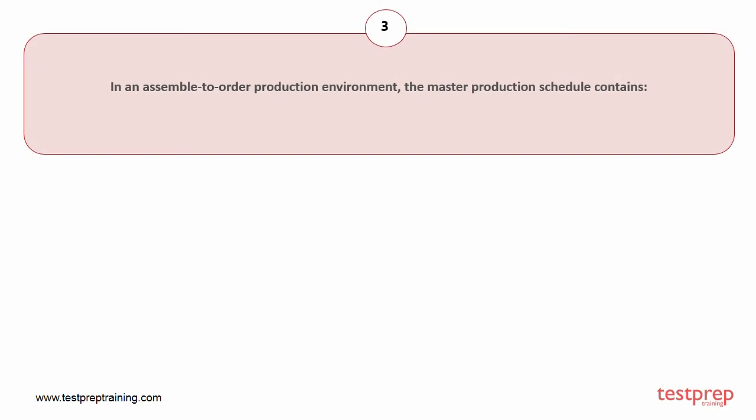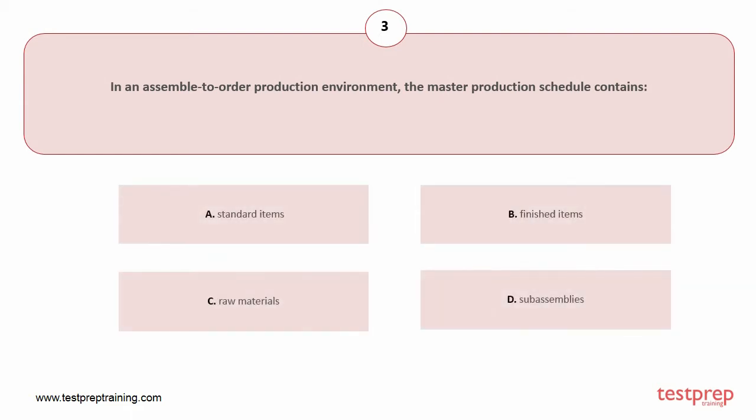Question number three: In an assemble-to-order production environment, the master production schedule contains your options: A) standard items, B) finished items, C) raw materials, D) sub-assemblies. The correct answer is option D.